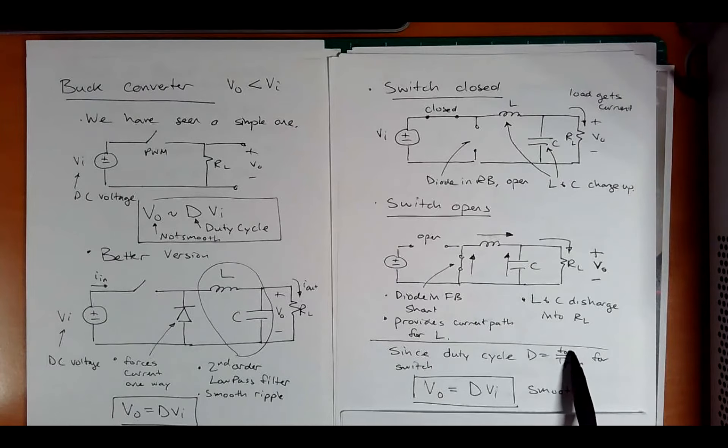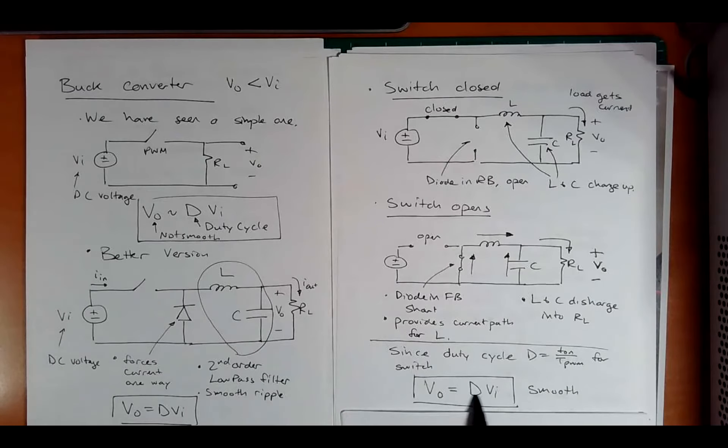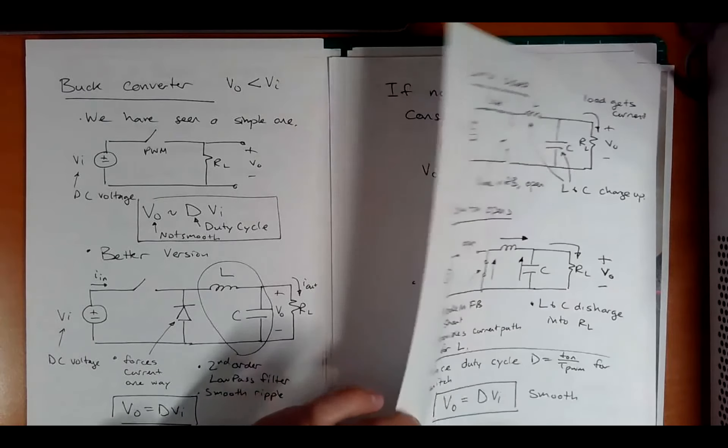Again, the duty cycle is the ratio of the on time to the PWM period. And so you get the same behavior, but now it's a little bit better. It's smoother. So this is a buck converter.